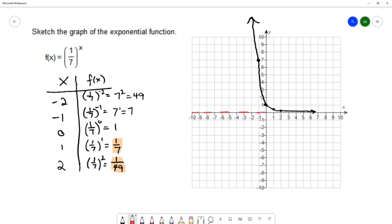This exponential function, like other exponential functions, has a horizontal asymptote. This horizontal asymptote is right on top of the x-axis, the line y = 0. So we have a sketch of our function f(x) = (1/7)^x.